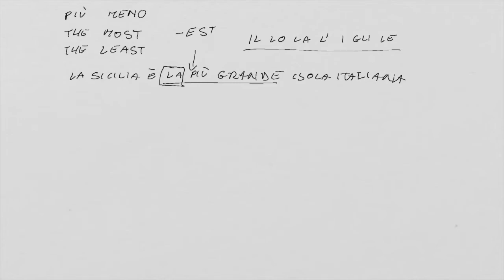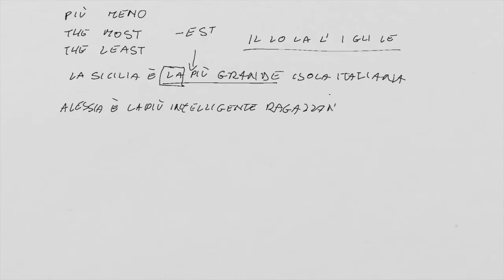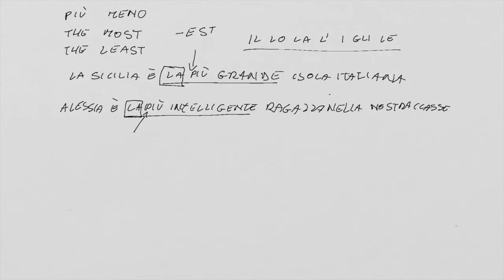Another example: Alessia is the smartest — or most intelligent — girl in our class. Alessia è la più intelligente ragazza nella nostra classe. 'The smartest' or 'the most intelligent' is la più intelligente. Again, 'la' because it refers to Alessia and it is in front of più, which starts with a consonant.